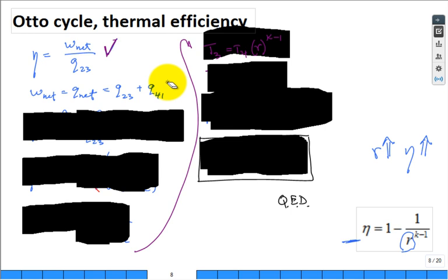What did we do at this stage? We said, hey, instead of calculating two works, think about Q_net, which is equal to work net. And I already have in the numerator and denominator the same thing, Q 2 to 3.